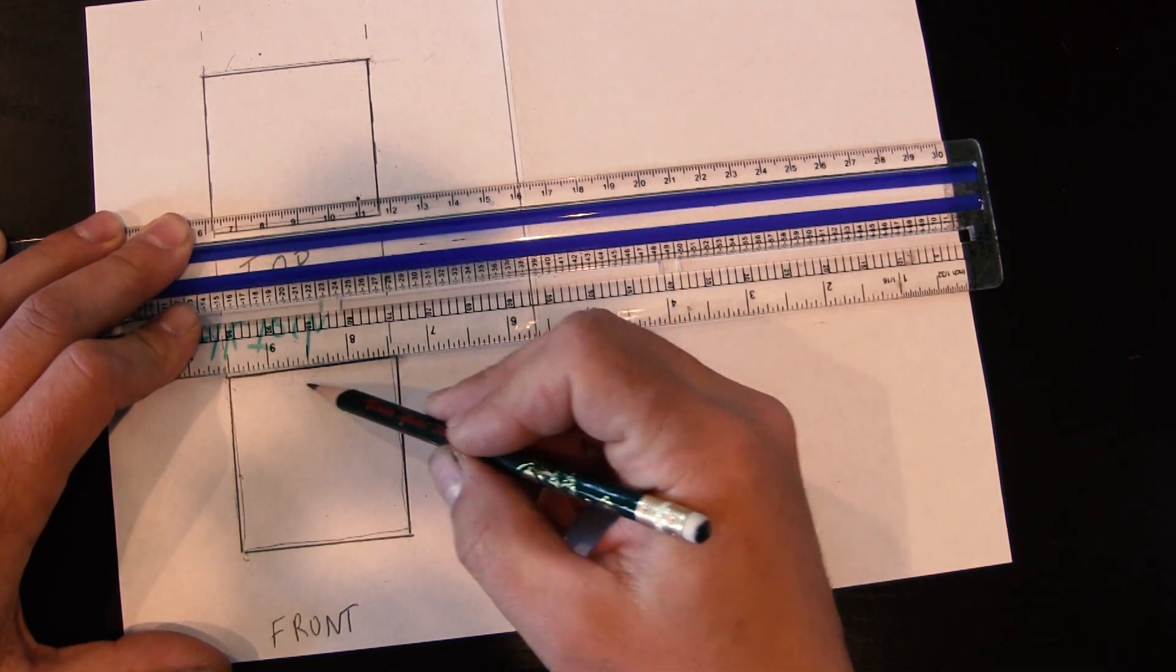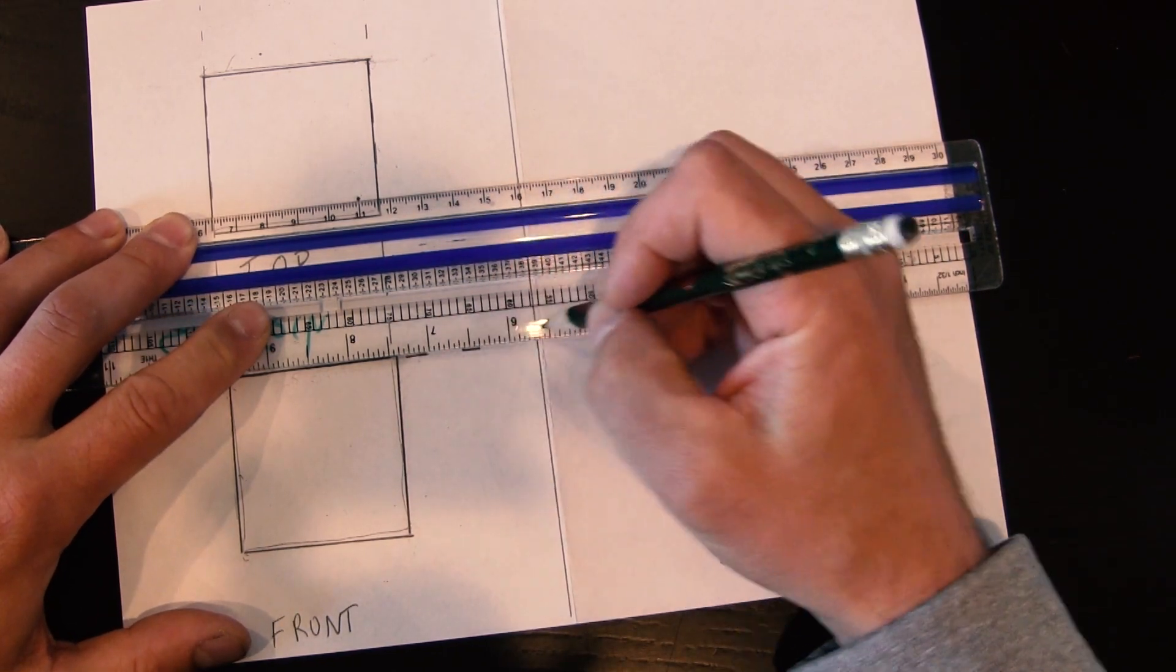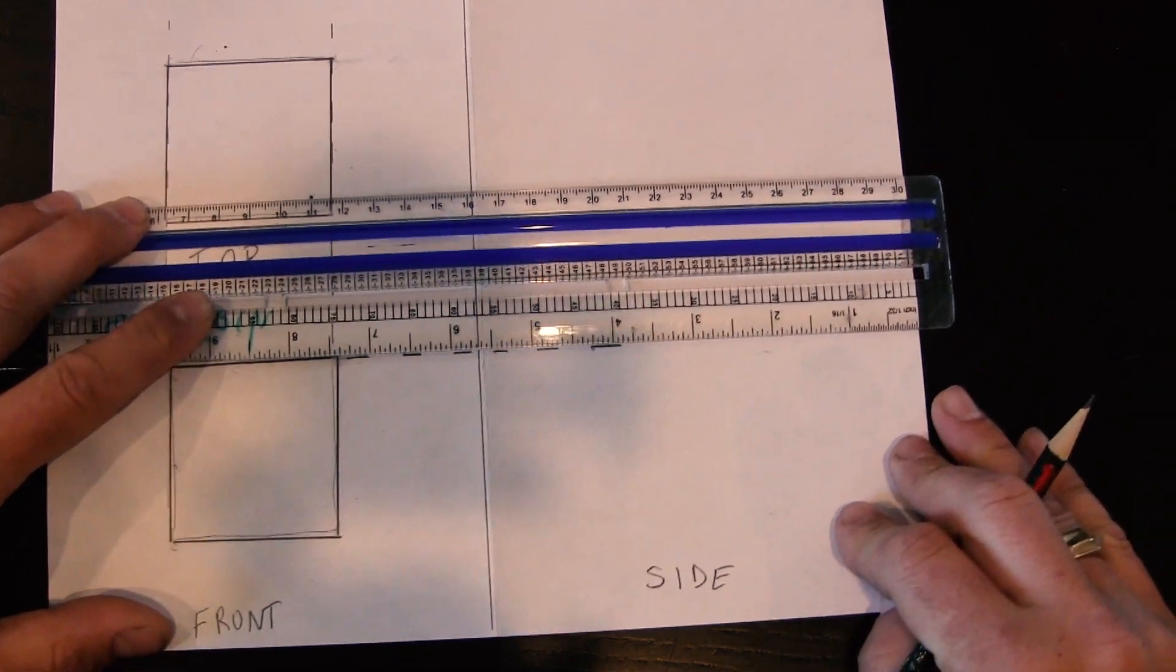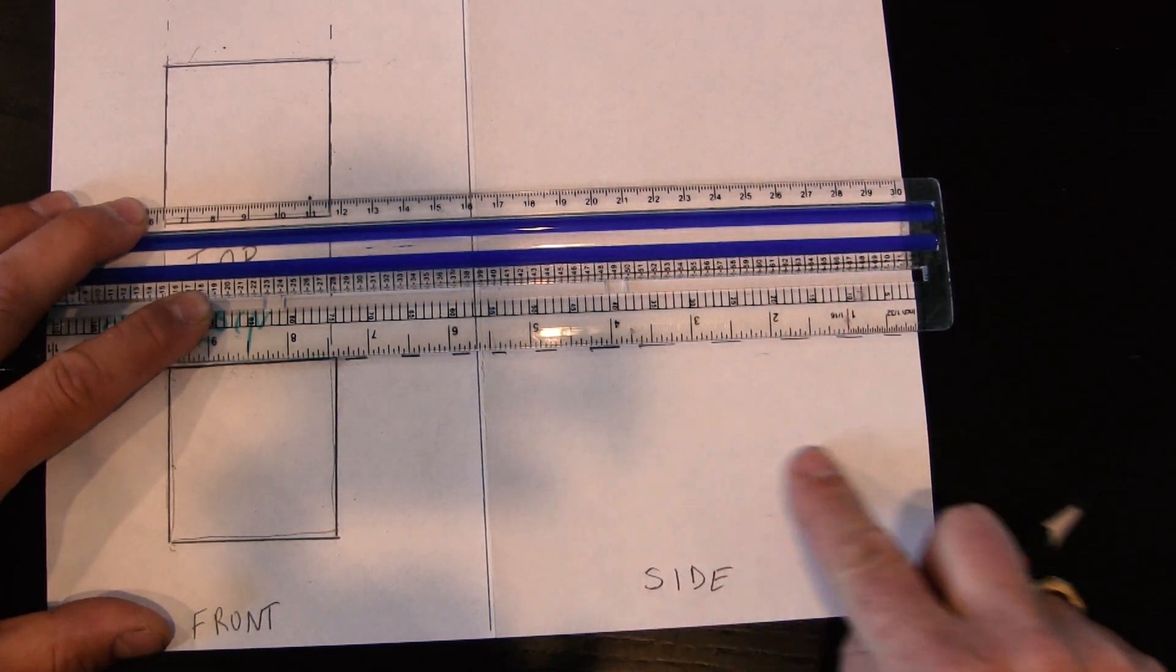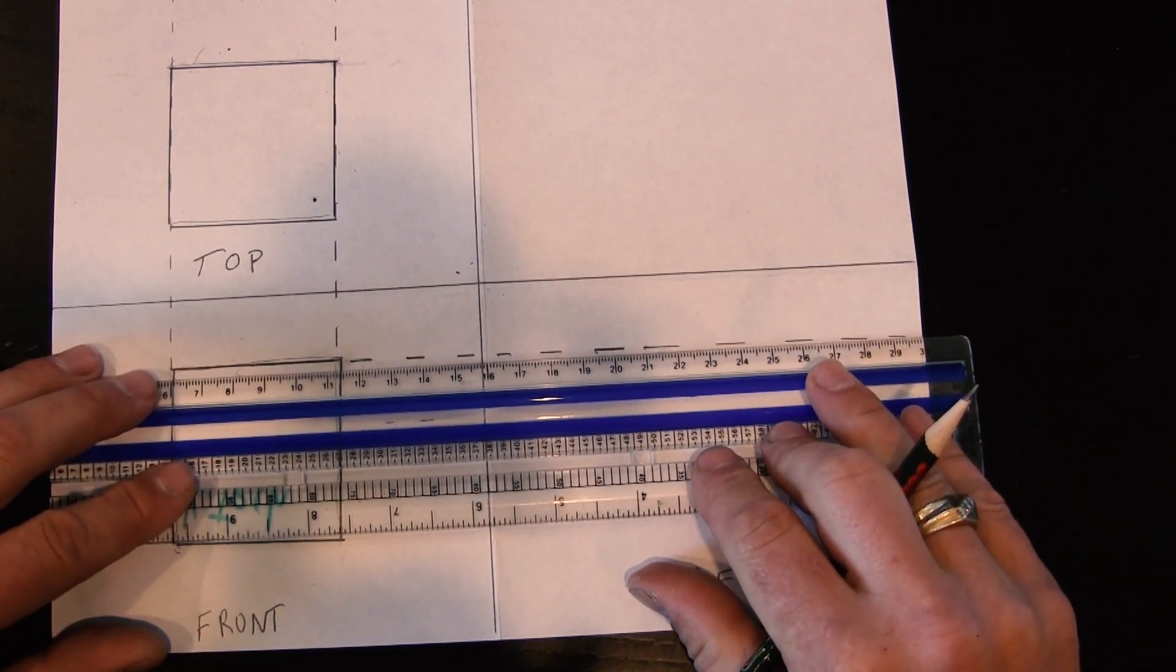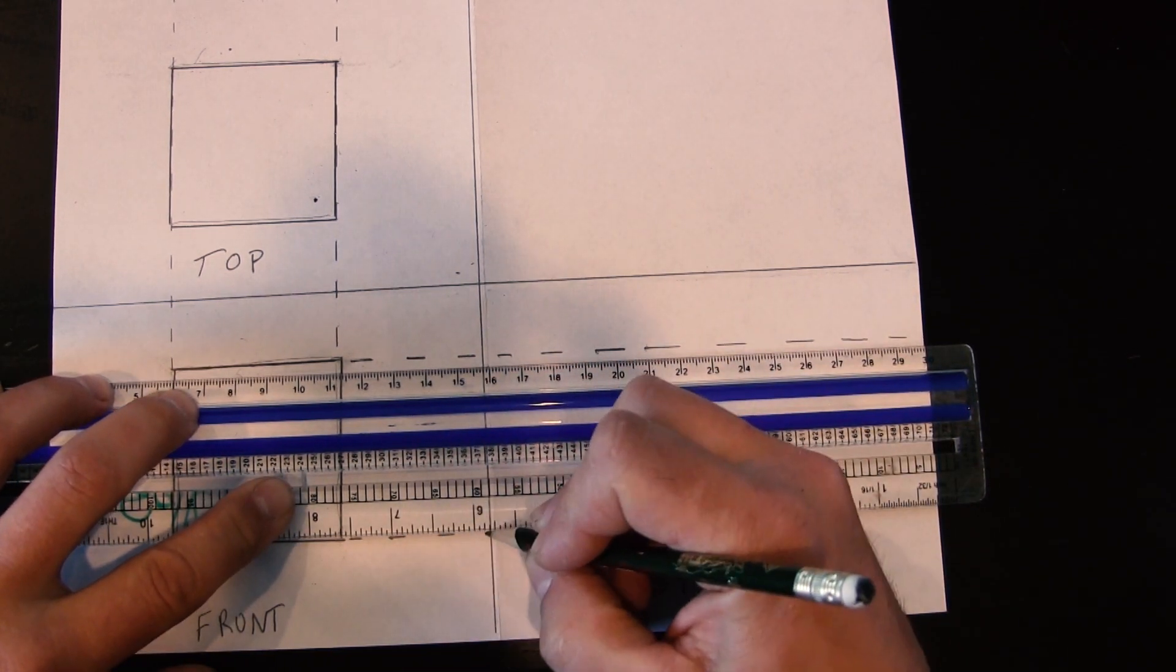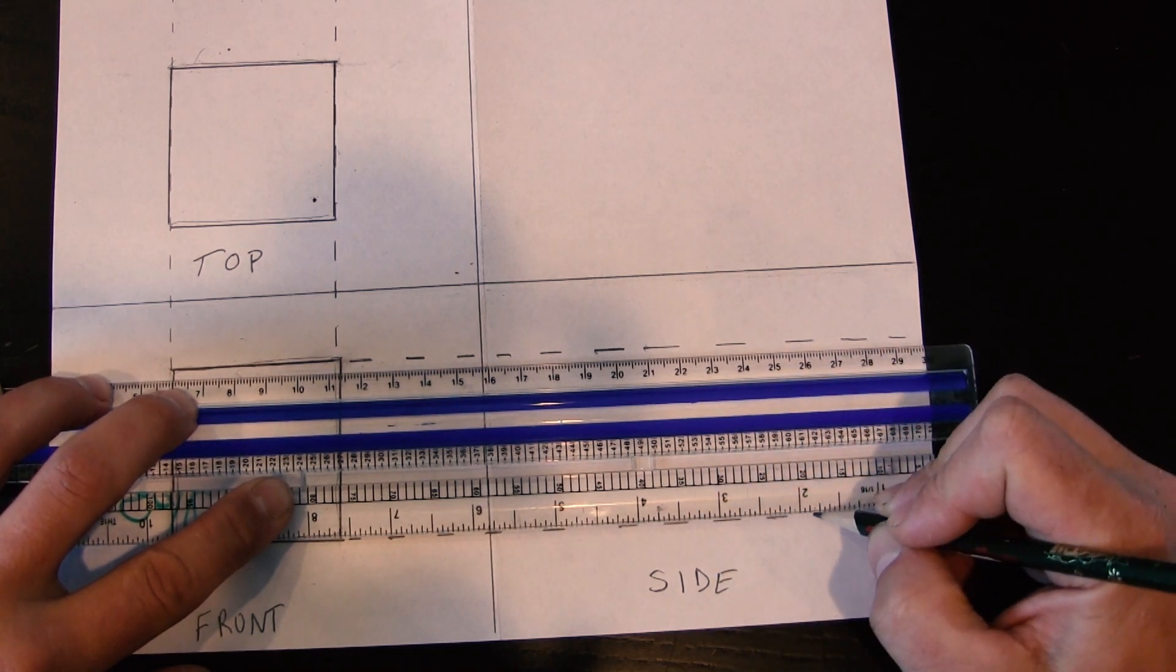That means I'm lining my ruler up with this drawing in the front view and I'm carrying these dashed lines all the way across and filling across this side view space. This is going to come across as well.